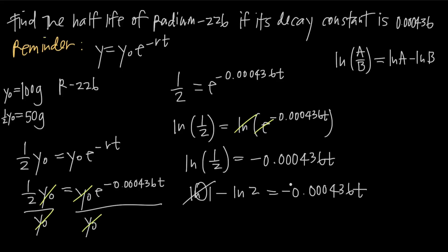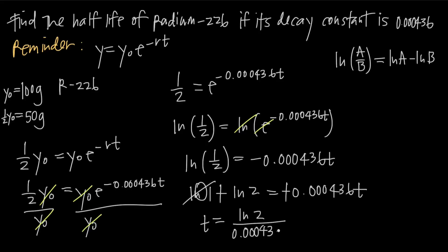Because we have a negative on both sides, we multiply both sides by negative 1 to cancel the negative sign. So now we have natural log of 2 equals the decay constant times t. Dividing both sides by the decay constant, we're left with t equals natural log of 2 divided by 0.000436.